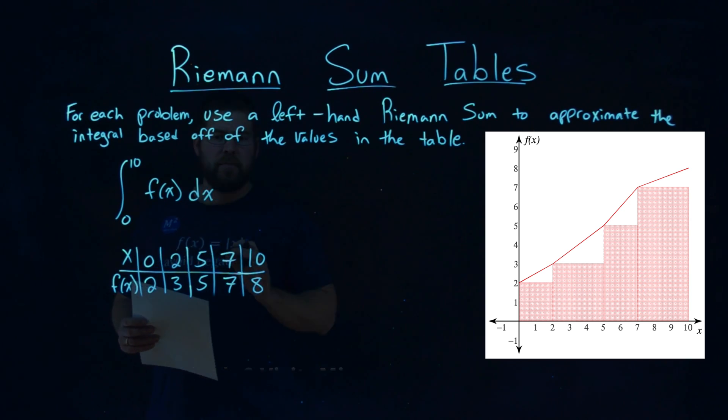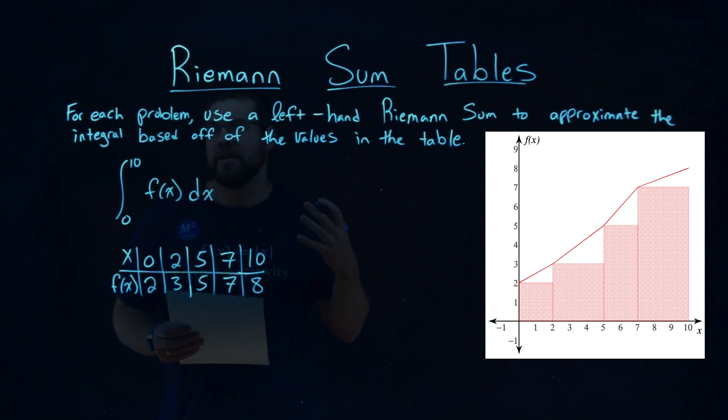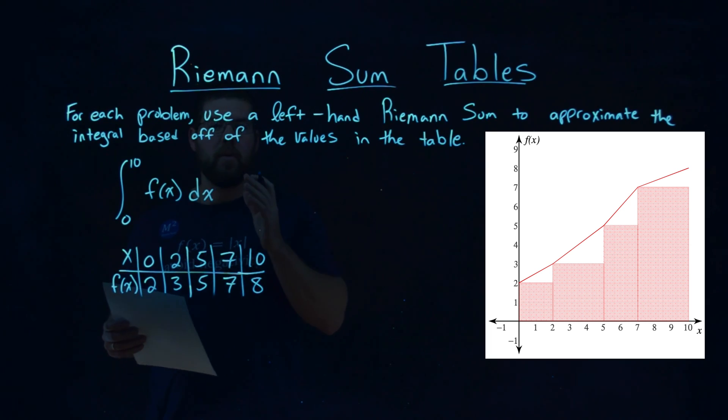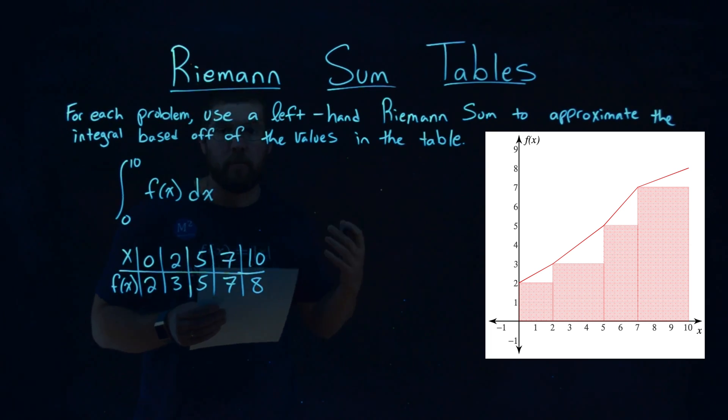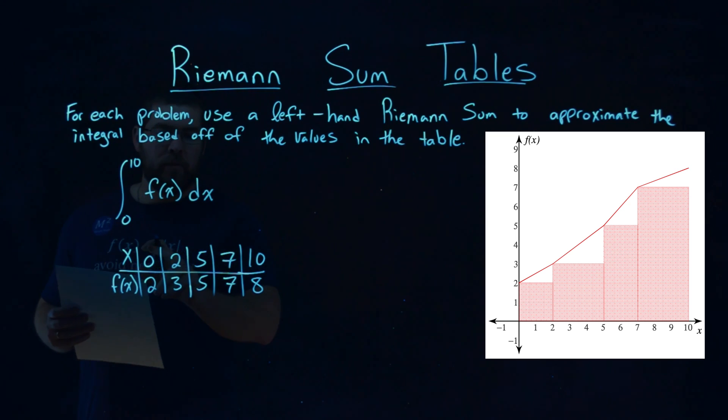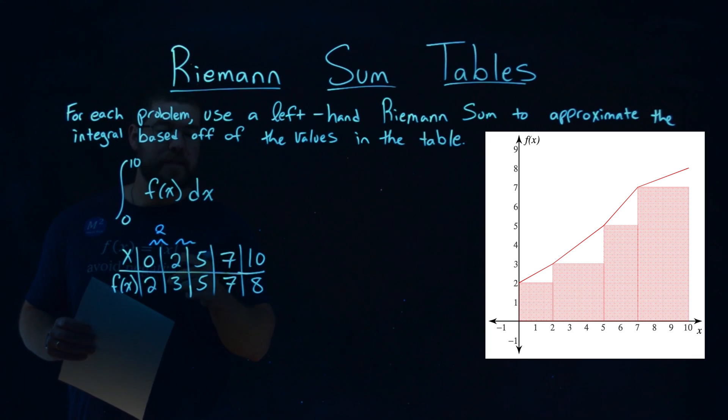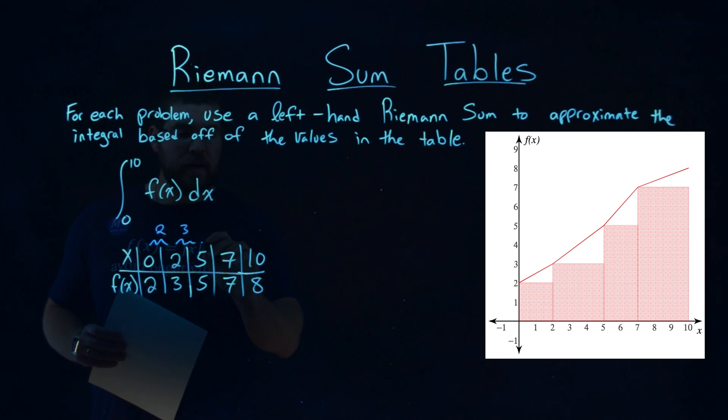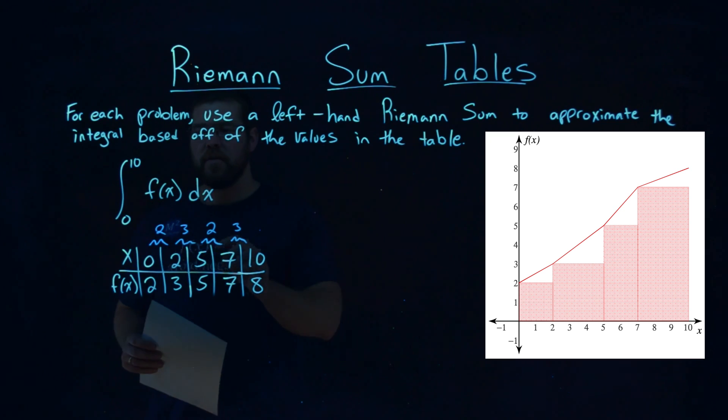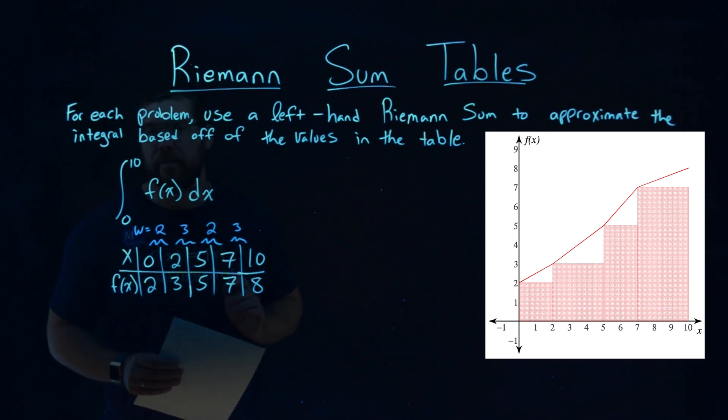We're given the table here, and the first thing I'd like to do is figure out the width of each one of our rectangles. So I find the width between each one of these x values. The width between 0 and 2 is 2. The width between 2 and 5 is 3. Between 5 and 7 is 2, and 7 to 10 is 3. So these are our widths we'll be dealing with.